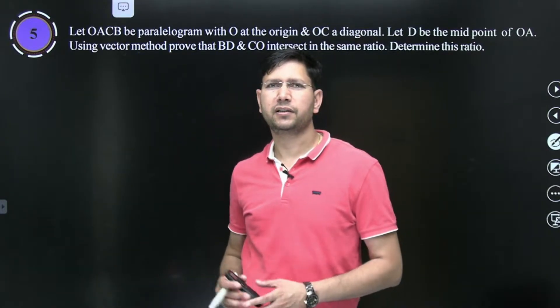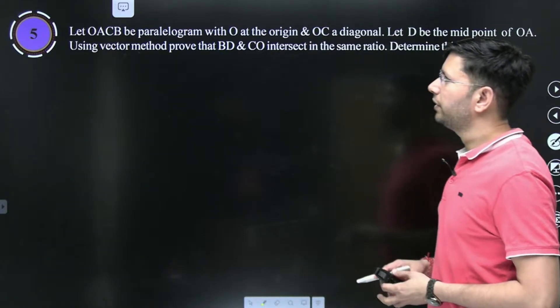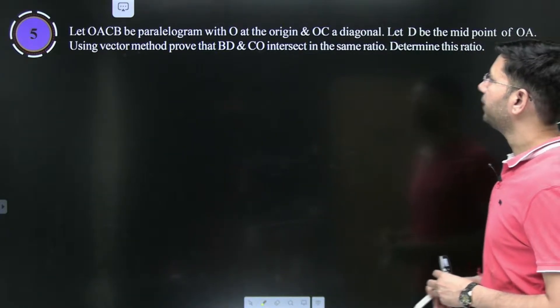Hello students, let's start with vector 3D, question 5 solution and discussion. Students, OACB is a parallelogram with O at the origin and OC a diagonal.